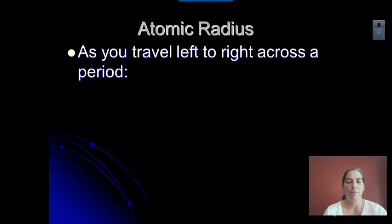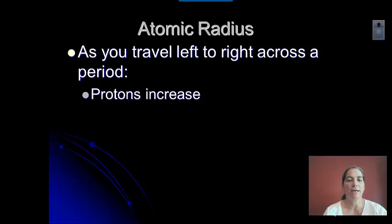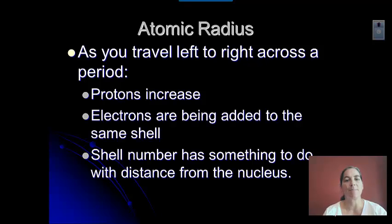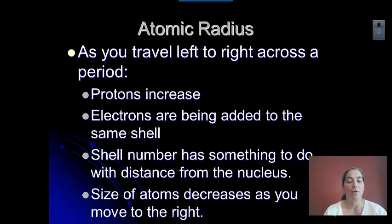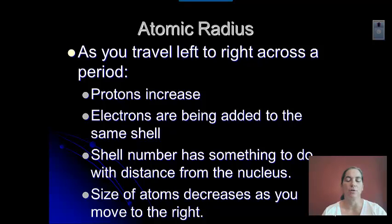Let's look at atomic radius. As you go left to right across a period, the protons increase, and your electrons increase too, but because you're going across a row, you're adding those electrons in the same shell — they're about the same distance from the nucleus. As the protons increase, the attraction between the positive nucleus, which is getting more positive, and the outermost negative electron increases. So the size of the atom shrinks down; as that positive charge increases, it pulls those electrons in closer. The radius of the atom decreases as you go left to right.